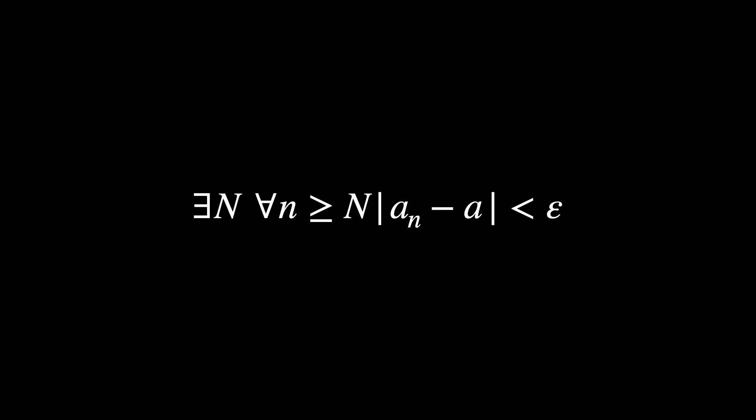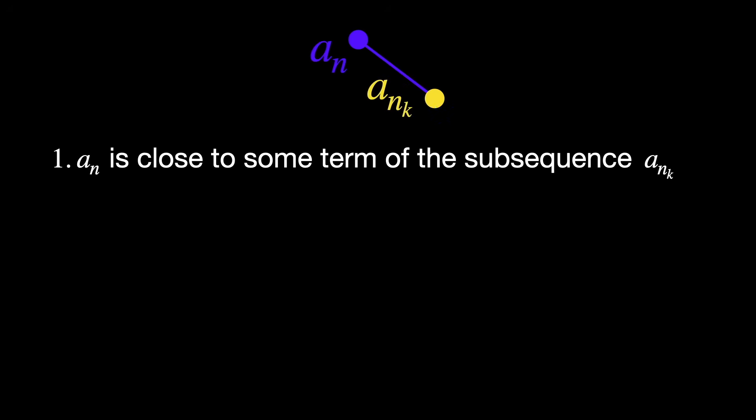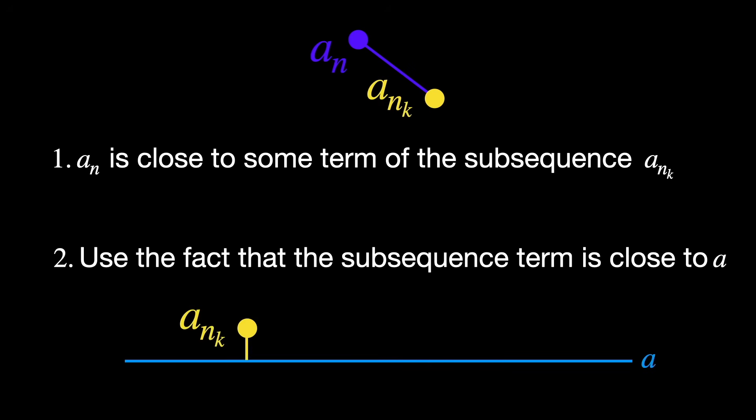Looking at the big picture, we want to show that eventually every term of the sequence is within epsilon of the limit a. But we don't know how to jump straight from a sub n to a. Instead, we use a two-step detour. First, we show that a sub n is close to some term of the subsequence a sub n sub k. And second, we use the fact that that subsequence term is close to a.